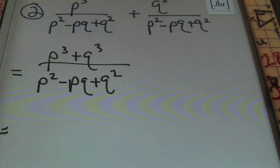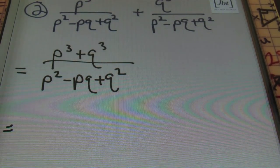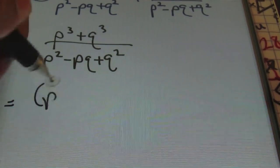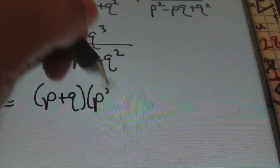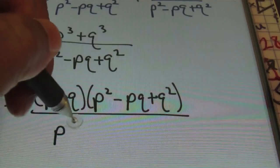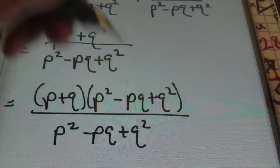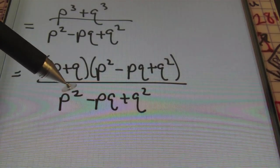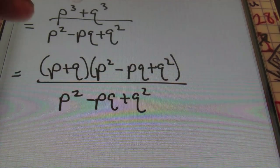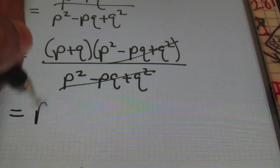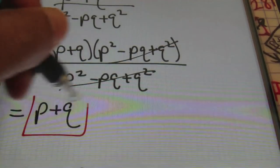From here, what you want to do is try to factor as much as possible. In the numerator, you have a sum of cubes. So in factoring that sum of cubes, you'll end up with p plus q times p squared minus pq plus q squared, all over the denominator p squared minus pq plus q squared. Notice that we have common factors — that p squared minus pq plus q squared cancels out, and I'll be left with p plus q. That's it.